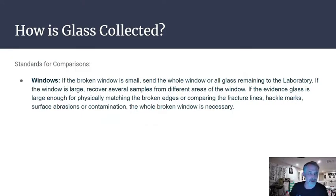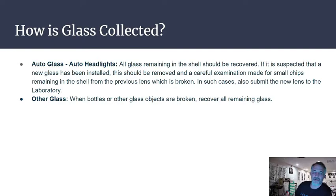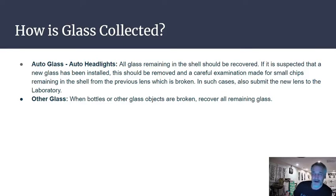Wrap large pieces separately in cotton, clean paper bag, or butcher paper. Small fragments can be packaged together in a druggist fold. Mark packaging as fragile or sharp hazard. Control samples from broken glass should include glass from the window pane marked with orientation — inside, outside, upside down. Place large glass fragments in boxes or between flat pieces of cardboard. For standards and comparisons: if a broken window is small, send the whole window; for auto glass and headlights, collect everything. When bottles or glass objects are broken, recover all remaining glass.